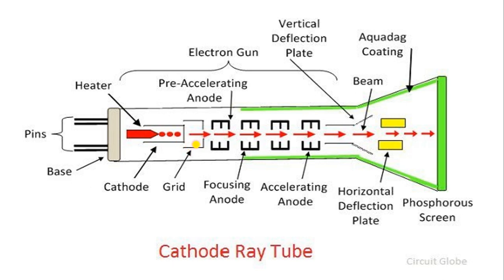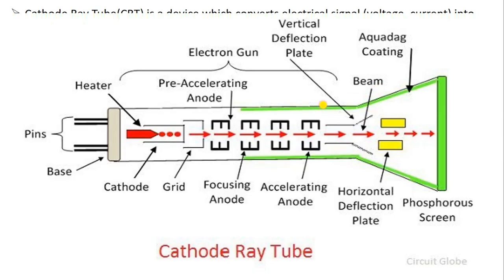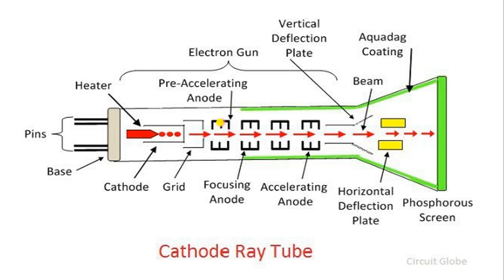The grid accelerates the electron, provides a push-up, and forces the electron to go in its path while also providing focus. Next is the pre-acceleration anode, focusing anode, and accelerating anode — these provide the path. There are three types of anodes: pre-accelerating anode, focusing anode, and accelerating anode. The anode provides the path for the electrons, directing them along their correct route.